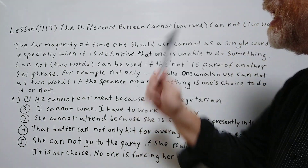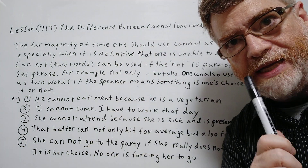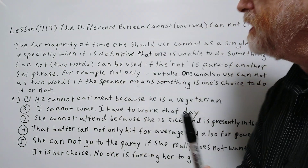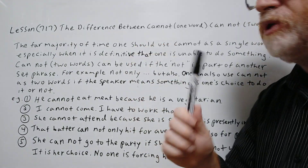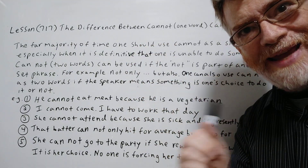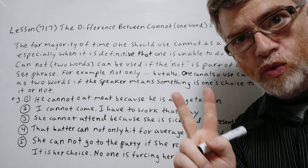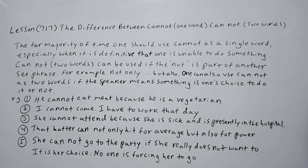Hi, this is Tutor Nick P and this is lesson 717. The title of today's lesson is the difference between 'cannot' one word and 'can not' two words. If you want a screenshot, do it right now. Let's get right to it.